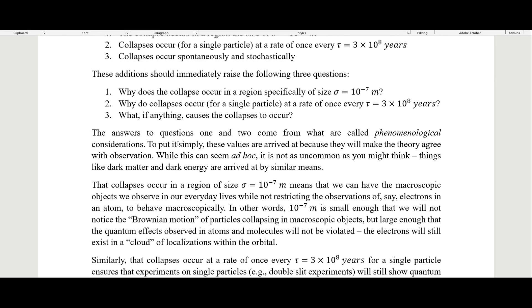The answers to questions one and two come from what are called phenomenological considerations. To put this simply, these values are arrived at because they will make the theory agree with observation. We know what type of observations we make, and so the theory has to fit those observations. While this can seem ad hoc, it is not as uncommon as you might think.